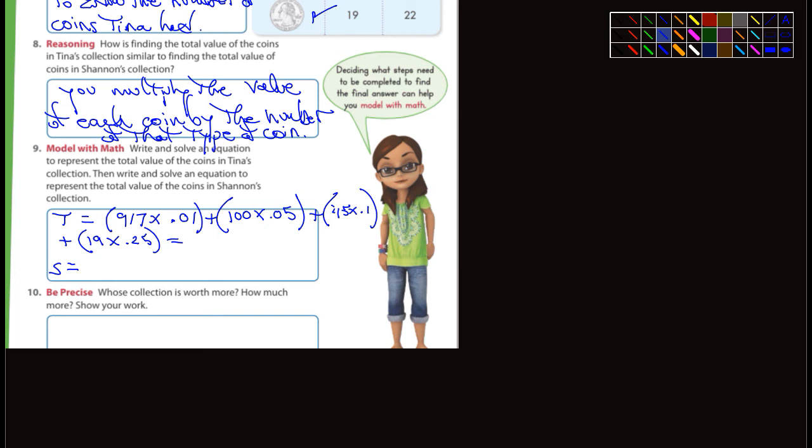Once you've done Shannon's, then you can total each one. And then you'll be able to answer number 10, which is whose collection is worth more and how much more. So there's two questions there. You're going to have to do a final subtraction piece. So anyways, that's it.